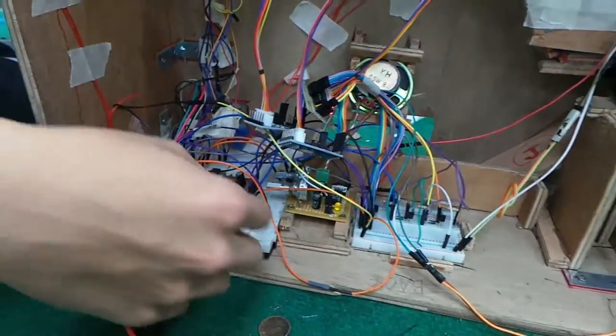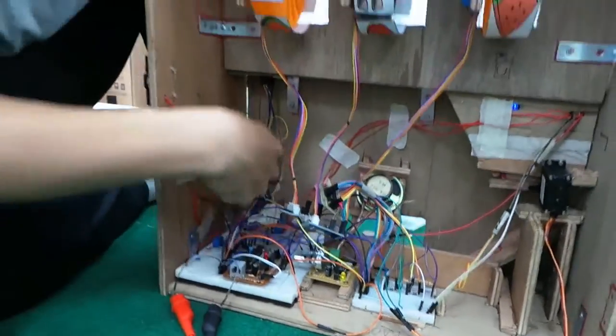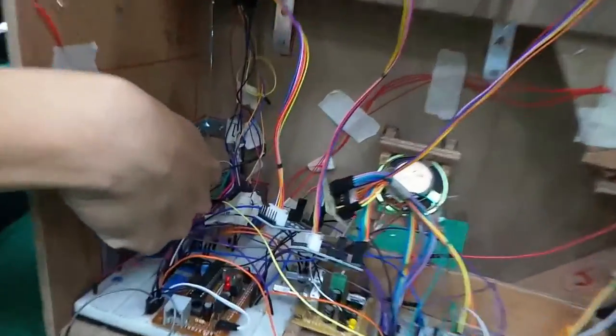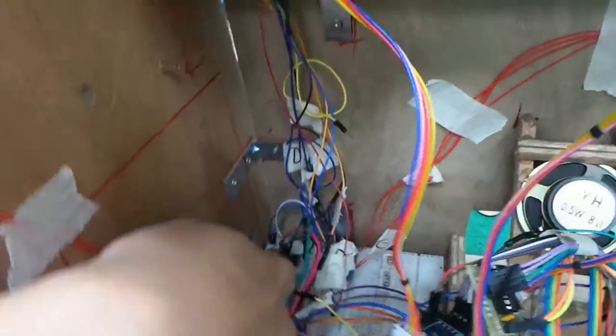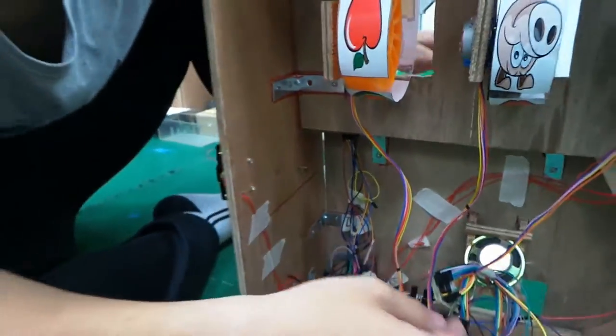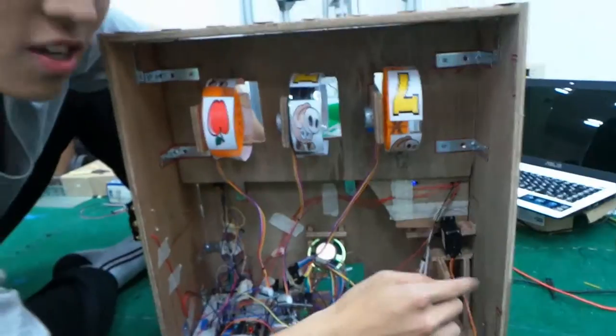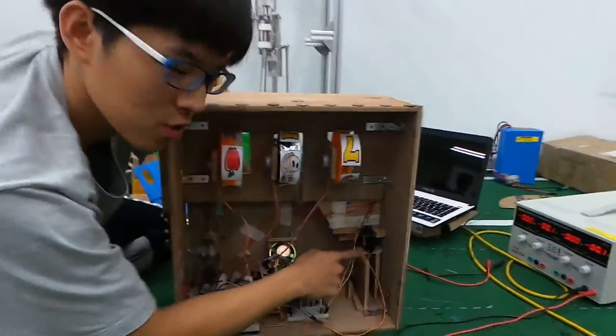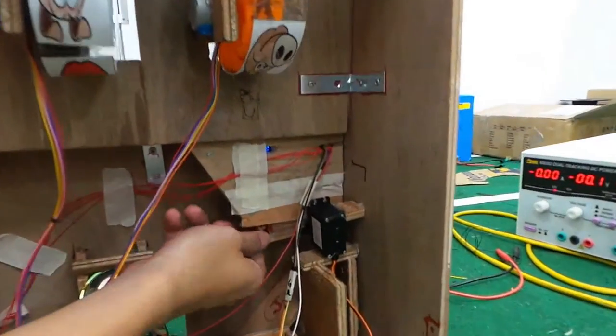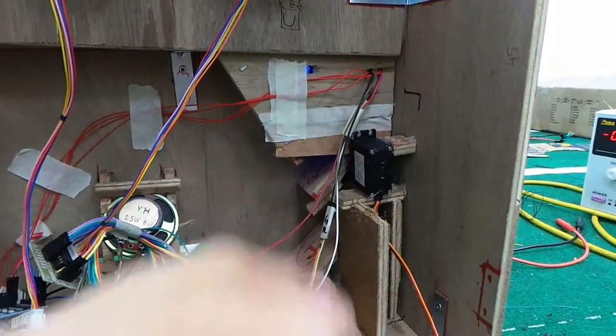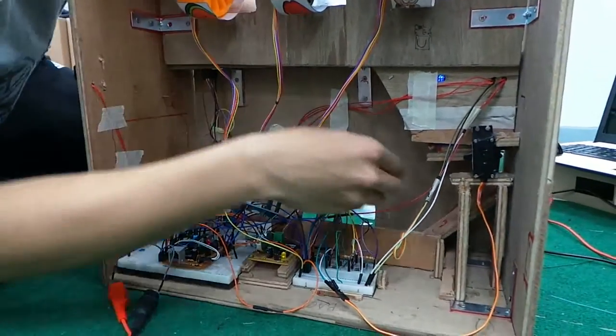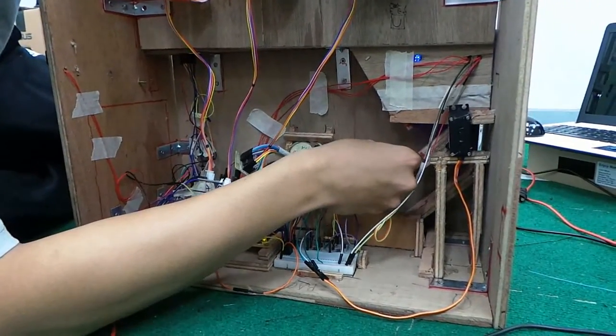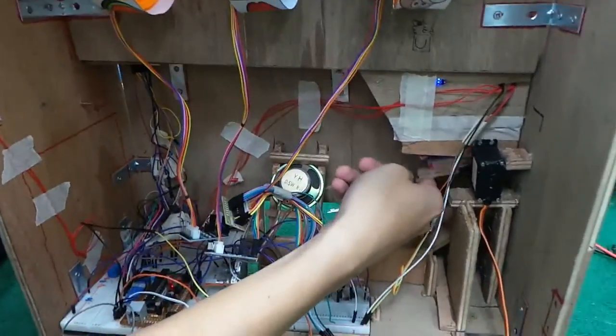When you get some score, here is to control the seven segments to show the numbers on it. When you get ten points, then the board will control this servo to open the door. If we got money in here, then it will drop the coin.